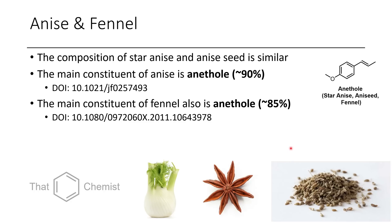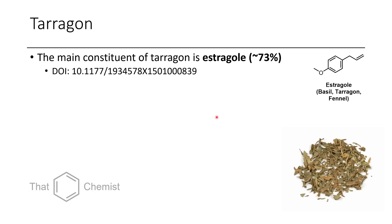In the case of anethole, you can see that instead of having the allylic group with a CH2 connected to the benzene, the CH3 is at the terminus, and so this is a styrene derivative. Now another spice is tarragon. Interestingly, tarragon has a major component of estragole. Estragole kind of looks like the eugenol seen earlier, but it's missing an oxygen, and nonetheless has a unique flavor. I have not actually smelled tarragon, but if you like the smell of tarragon, comment down below.